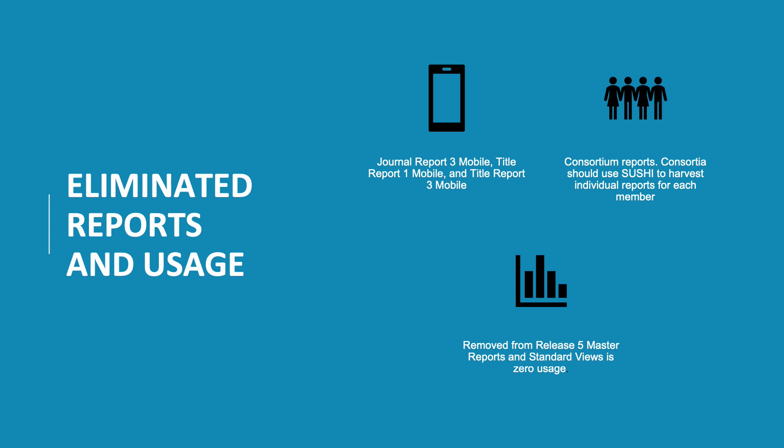Some reports from Release 4 have been eliminated in Release 5. The three mobile reports — Journal Report 3 Mobile, Title Report 1 Mobile, and Title Report 3 Mobile — have been eliminated because few platforms now offer a bespoke mobile view, relying instead on responsive design. Release 5 also eliminates consortium reports because their size makes creating and consuming them impractical; consortia should use SUSHI to harvest individual reports for each member, and Counter is facilitating tools to make this a simple one-step process. Zero usage has also been removed from Release 5 master reports and standard views, as not all publishers or vendors can determine for which titles and date ranges zero usage would need to be included, though they may choose to offer customised Counter 5 reports including zero usage.